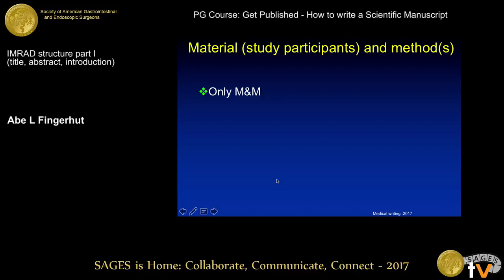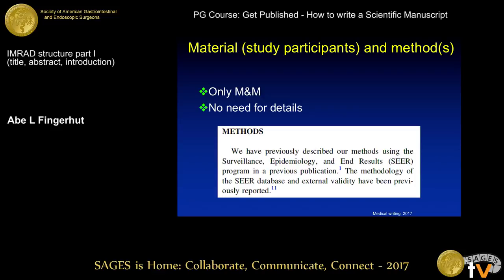What's most important, and one of the most common errors that we see, is that material and methods has other things than material and methods. This is wrong — only material and methods. No details. If you have details that you want to relate, you can put them into an annex, you can put them outside, and that's something that you have to tell the editor when you write your cover letter.